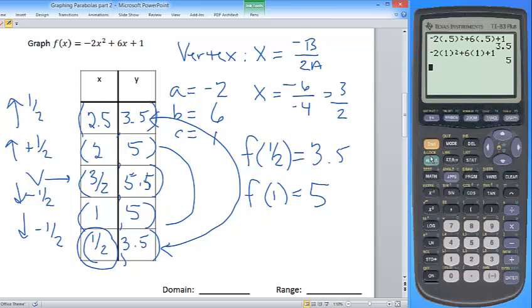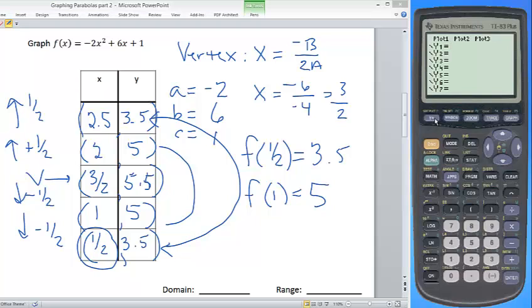And you're going to do that by hand, but I want to show you how to check your work using the graphing calculator. So you're going to press the y= button, and you're going to type in this screen the function that you're given: -2x² + 6x + 1. And to graph this or to view the graph, you're going to hit the graph button.